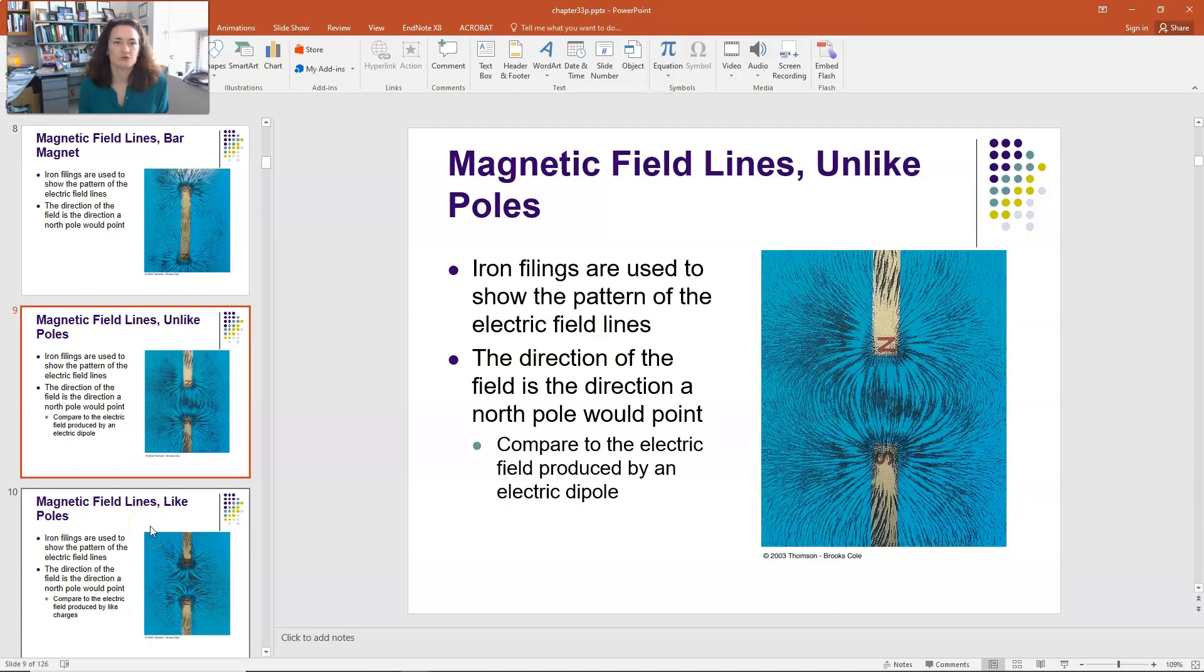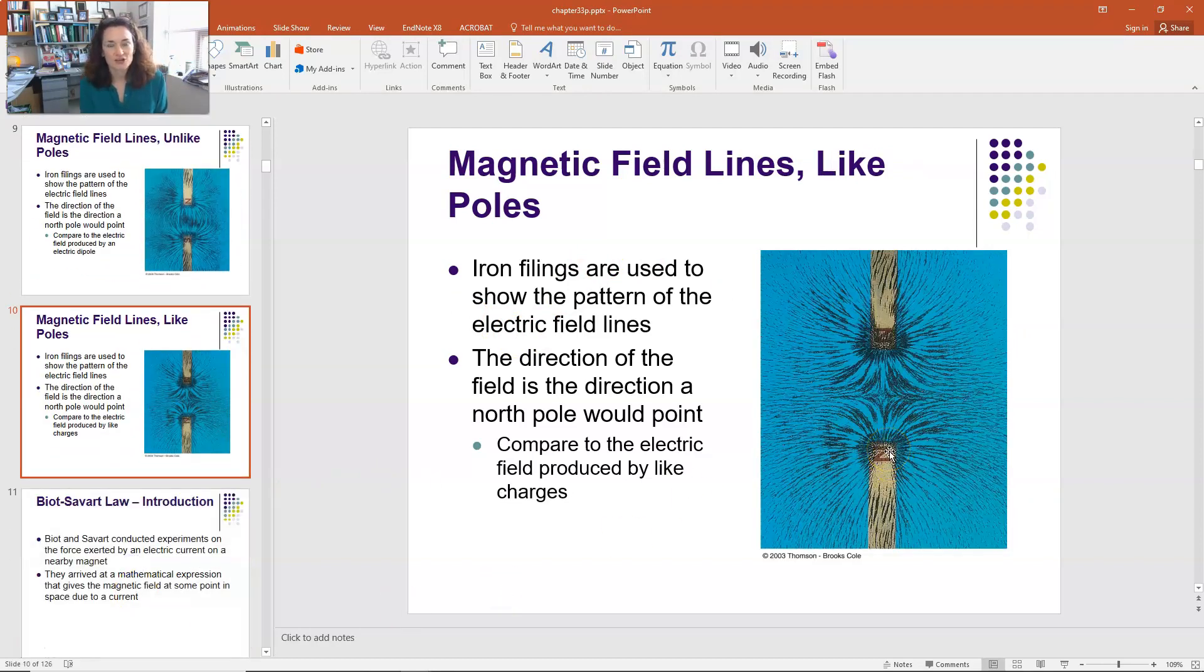Now, you can also expand that demo a little bit and put a north and south pole next to one another and show how the field lines would point from the north to the south pole there. And if you put two dissimilar poles together, you can show how those field lines kind of diverge out away from one another, showing the repulsive action between two like poles. So that's what's going on there.